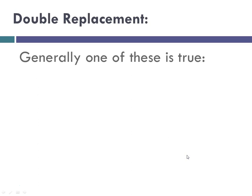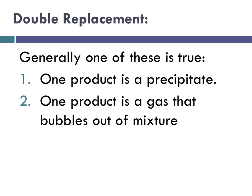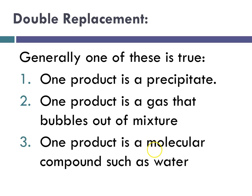So in a double replacement, generally one of these things is true. One of the products is a precipitate — that's where we check our solubility table. One of the products is a gas; it bubbles out of the mixture, and if a gas were to form it would probably be either hydrogen gas, nitrogen gas, oxygen gas, or carbon dioxide — you would recognize them. And the third situation is a product that forms as a molecular compound, and for our purposes it will usually be water. How will you know it's molecular? Because it's a nonmetal with a nonmetal.